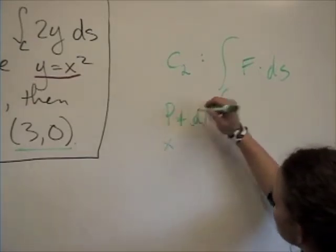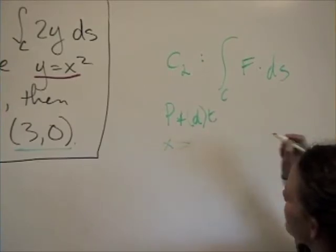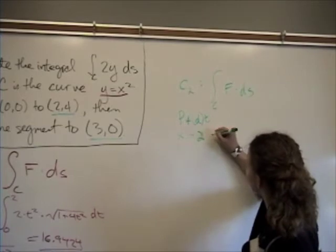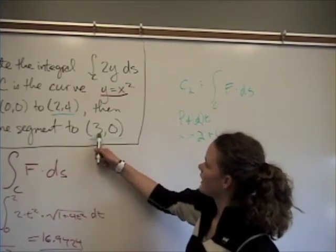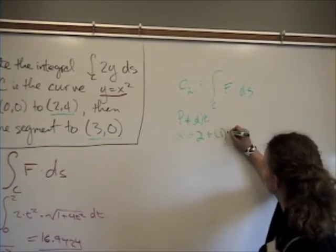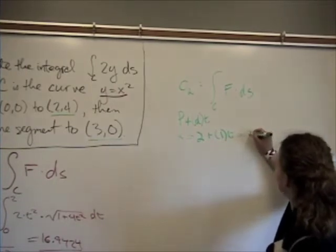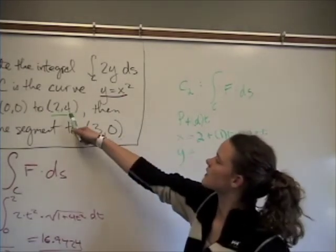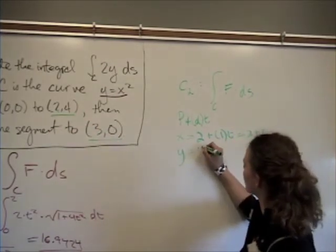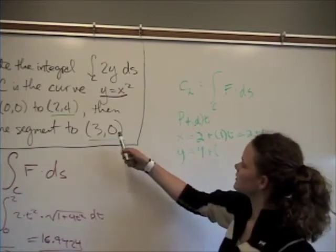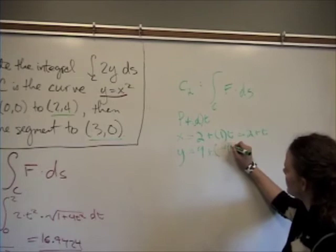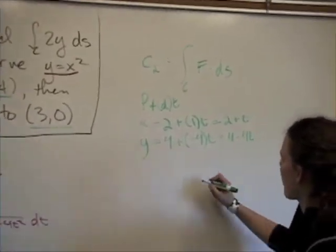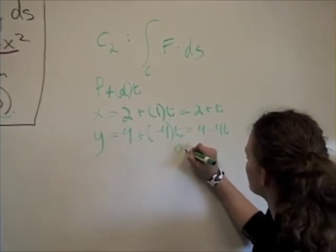For x we have our point, which is 2, plus our direction which is 3 minus 2, so that's 1 times t, giving x equals 2 plus t. Then y equals 4 plus the direction zero minus 4, which is negative 4 times t, giving y equals 4 minus 4t. And t goes from zero to one.